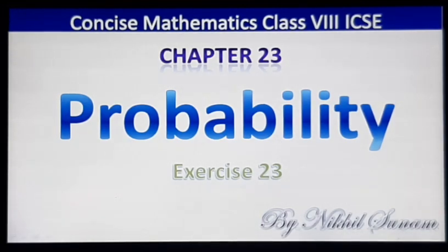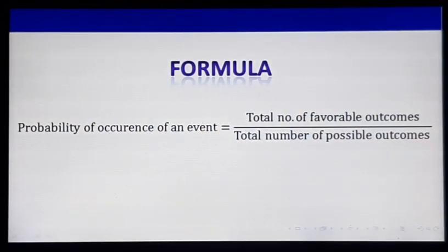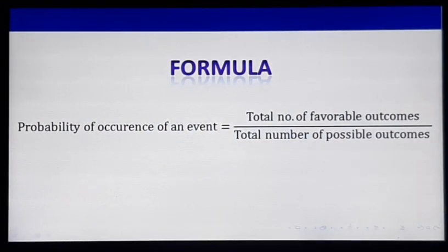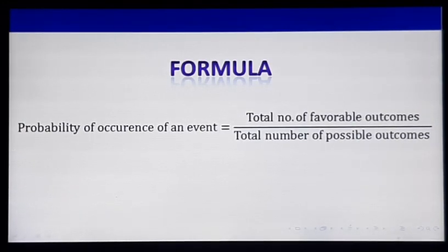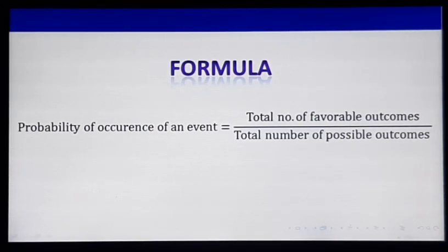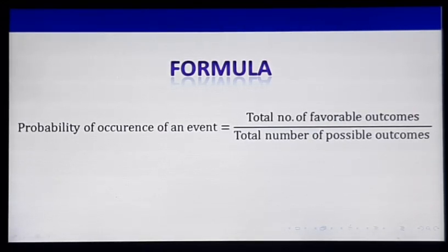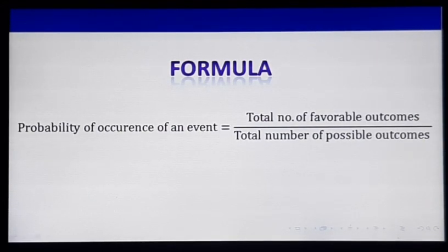The formula we are going to use in this chapter is given here. You may pause the video to note down the formula. The formula says: probability of occurrence of an event. Probability means it's a chance, and this particular thing is most often used in gambling.